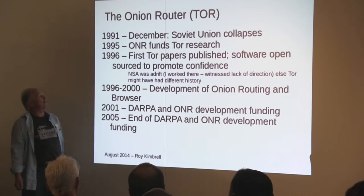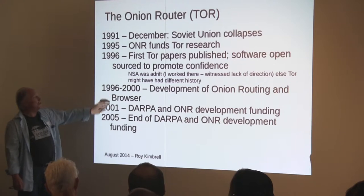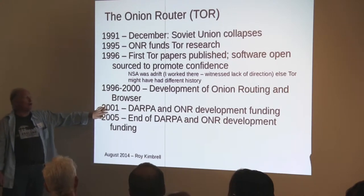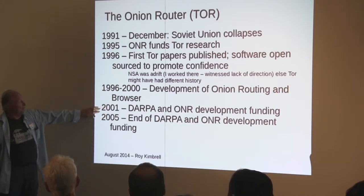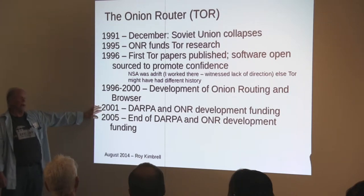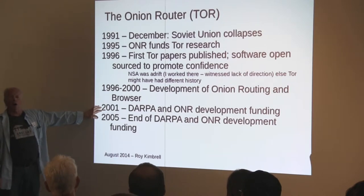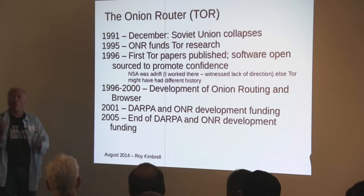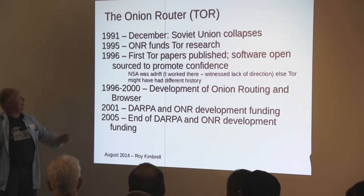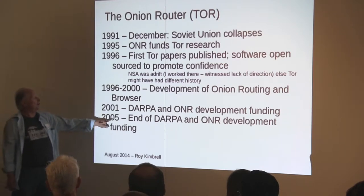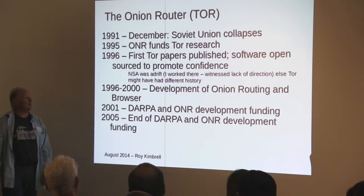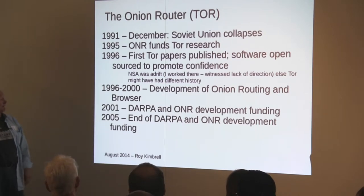From 1996 to 2000, development of the Onion Routing browser commenced. In 2001, DARPA and ONR development funding started — and 2001 is also when we had the terrorist attack on the World Trade Center. So you had these two forces competing with each other, and frankly Tor won. By 2005 it was the end of DARPA and ONR funding, but funding continued.